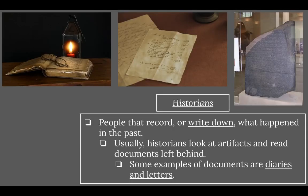Next, we have historians — people that record or write down what happened in the past. Usually, historians look at artifacts and read documents left behind, such as diaries and letters. Think of historians as directly doing writing — they're writing down what they're learning about the past. For thousands of years, we've been leaving behind written records, and historians would study those records.